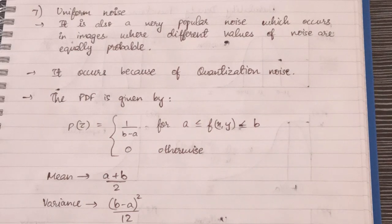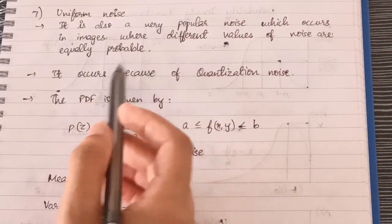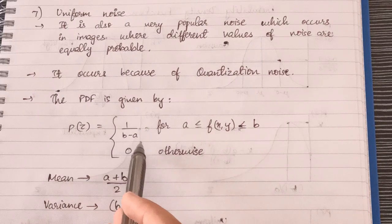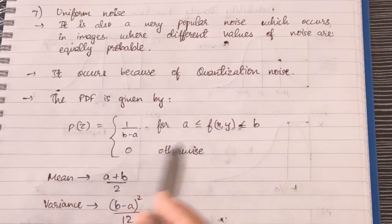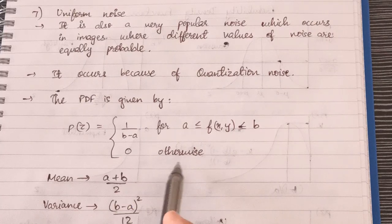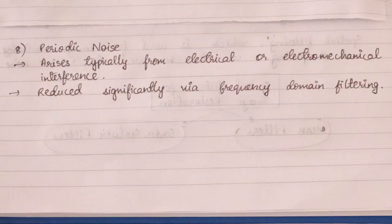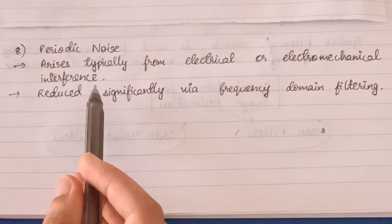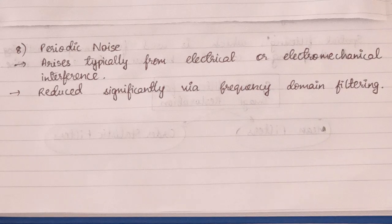Next is uniform noise, a very common noise where different values of noise are equally probable. It occurs because of quantization noise. The PDF is: p(z) = 1/(b − a) for a ≤ f(x,y) ≤ b, and 0 otherwise. The mean is (a + b)/2 and the variance is (b − a)²/12. There is also periodic noise, which arises from electrical or electromechanical interference and is reduced significantly via frequency domain filtering.